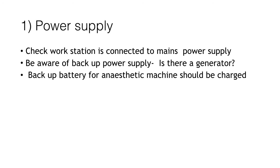The first stage in manually checking the anaesthetic machine is checking the power supply. You should check the workstation is connected to the mains power supply and that this is switched on. You should also be aware of any backup power supplies that are available, for example generators. Backup batteries should be adequately charged so they can be ready to use if required.